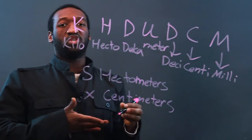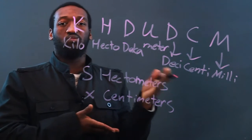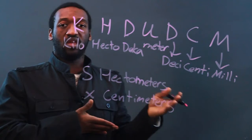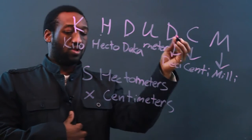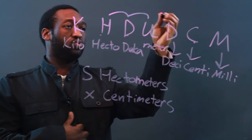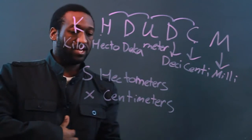Now, for the conversion, all you have to do is move the decimal point to the left or right, however many spaces that you want to go. So to go from hecto to centi, I will move one, two, three, four spaces.